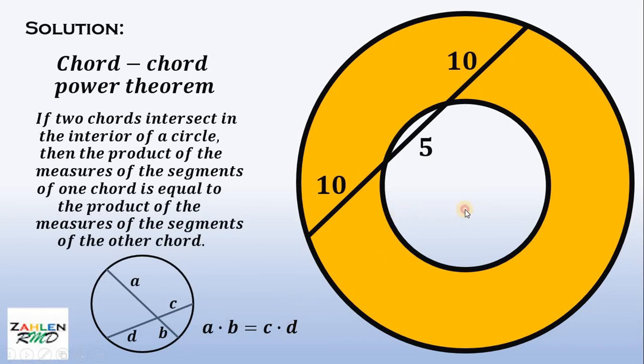To use this theorem, we need to find the center of this circle. Then, we need to create a diagonal like this. Make sure that this diameter intersects this chord at exactly the point on the small circle.